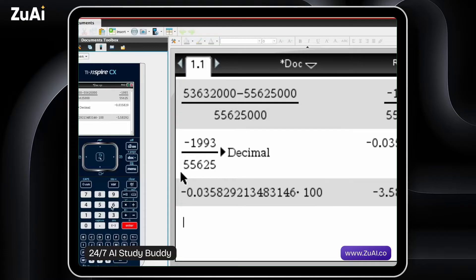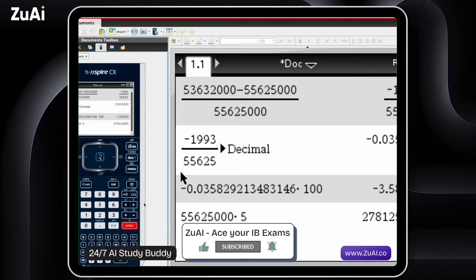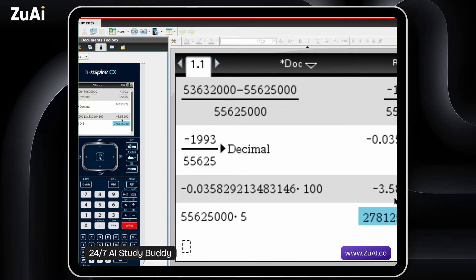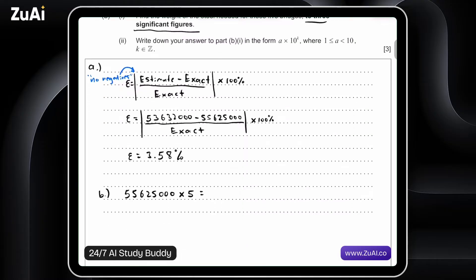Here we go. 55,625,000, and then let's times this by five. Okay. So what we have is 278,125,000. So let's write that out, going back to the document here.